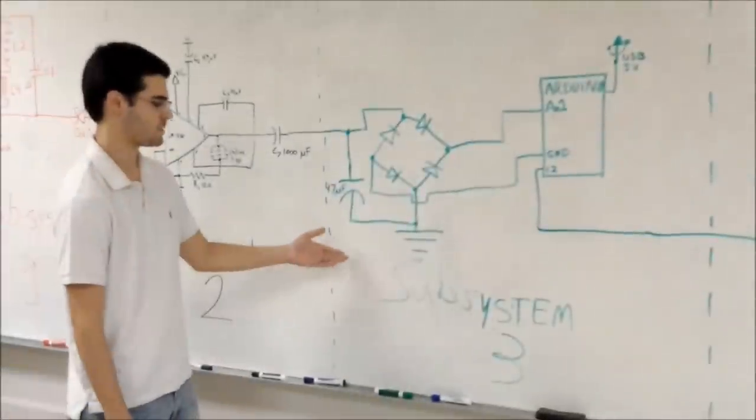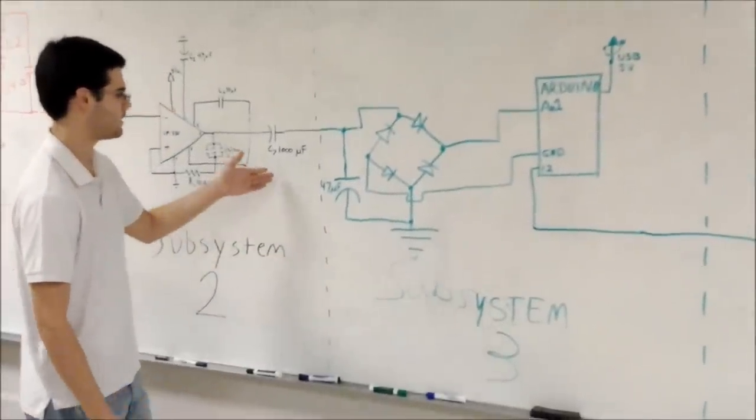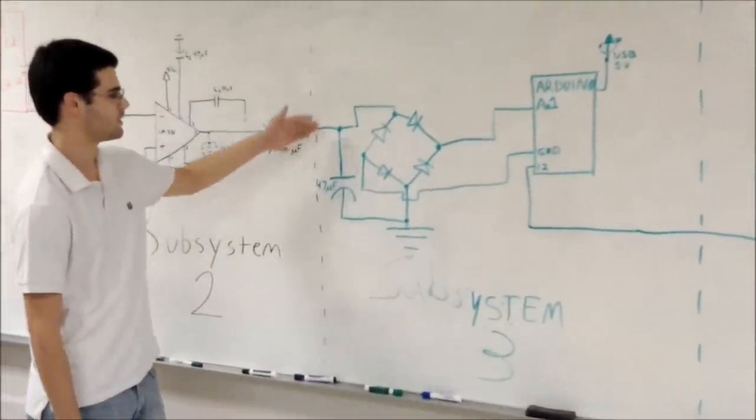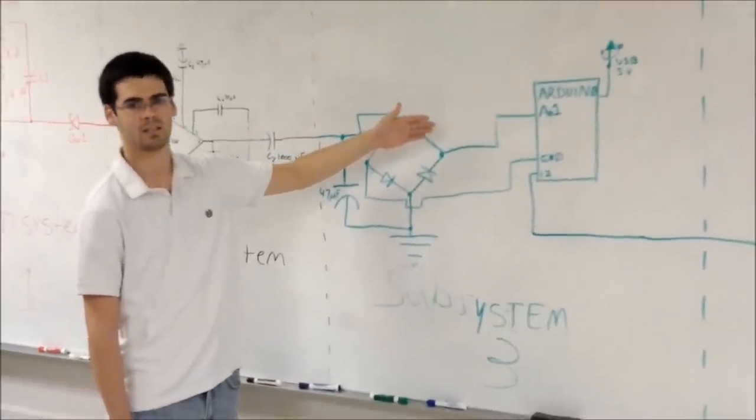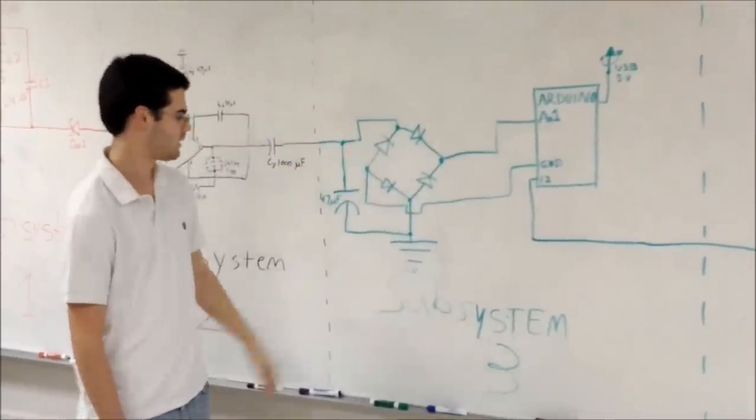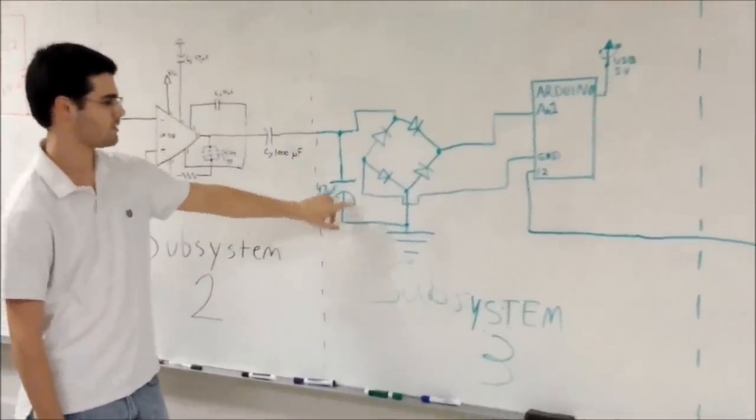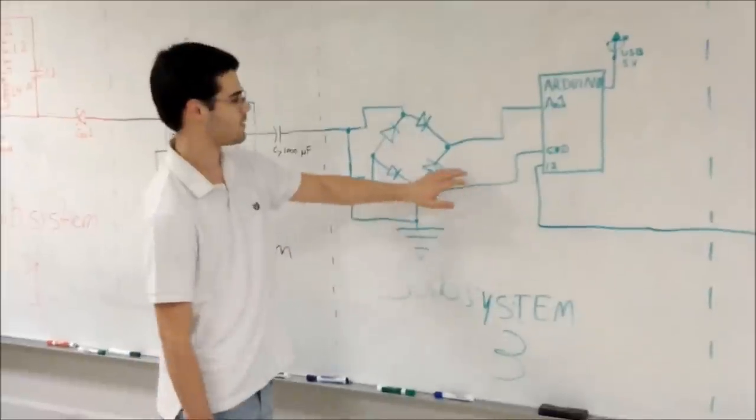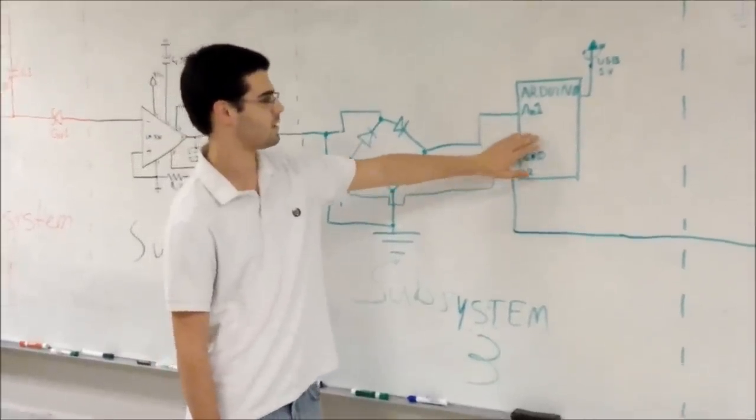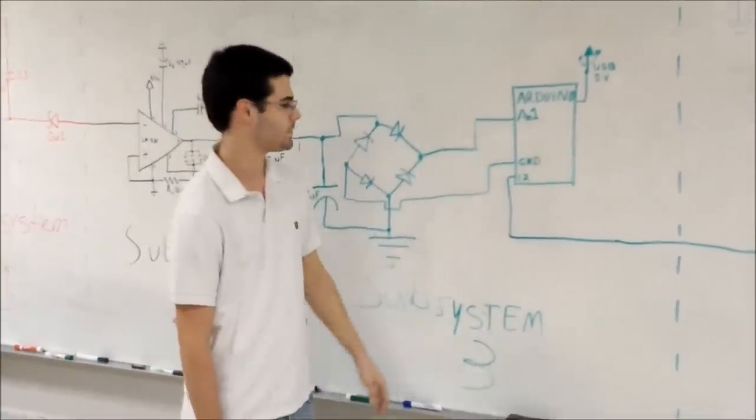Here we have subsystem three which is taking the AC signal from subsystem two and applying it to a rectifier so that we can get a DC voltage out. We also have a capacitor in parallel with the rectifier to reduce the ripple. Our DC output is the analog input to our Arduino chip.